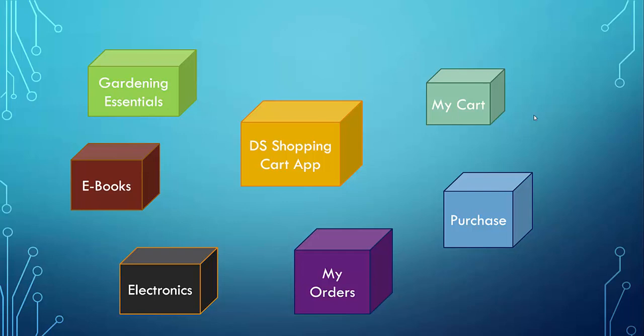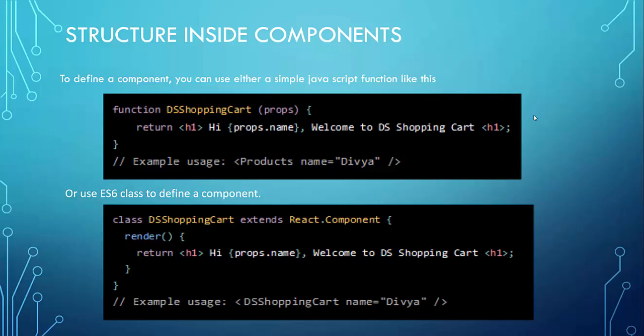Each and every component in React has a certain kind of structure. To define a component, you can either use a simple JavaScript function, where you have the function keyword, a function name, props for passing variables, and a return statement that returns an HTML element.